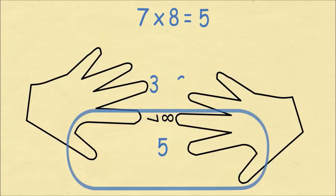The fingers that are above the touch fingers are 3 on the left hand and 2 on the right hand. We multiply these — 3 times 2 is 6 — and that gets us our answer of 56.